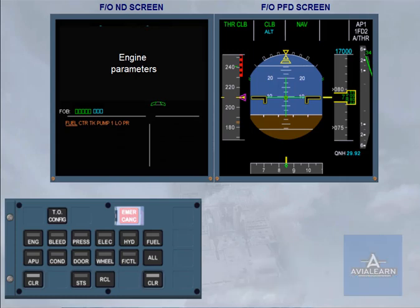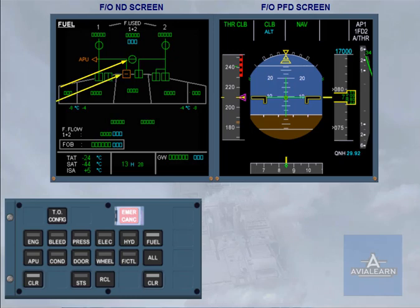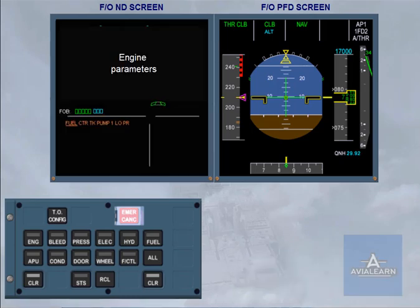As before, the fuel page is displayed while the key is depressed. You can see on the system page that the cross-feed is connected and the pump has shut down. As soon as the key is released, the engine warning display returns.